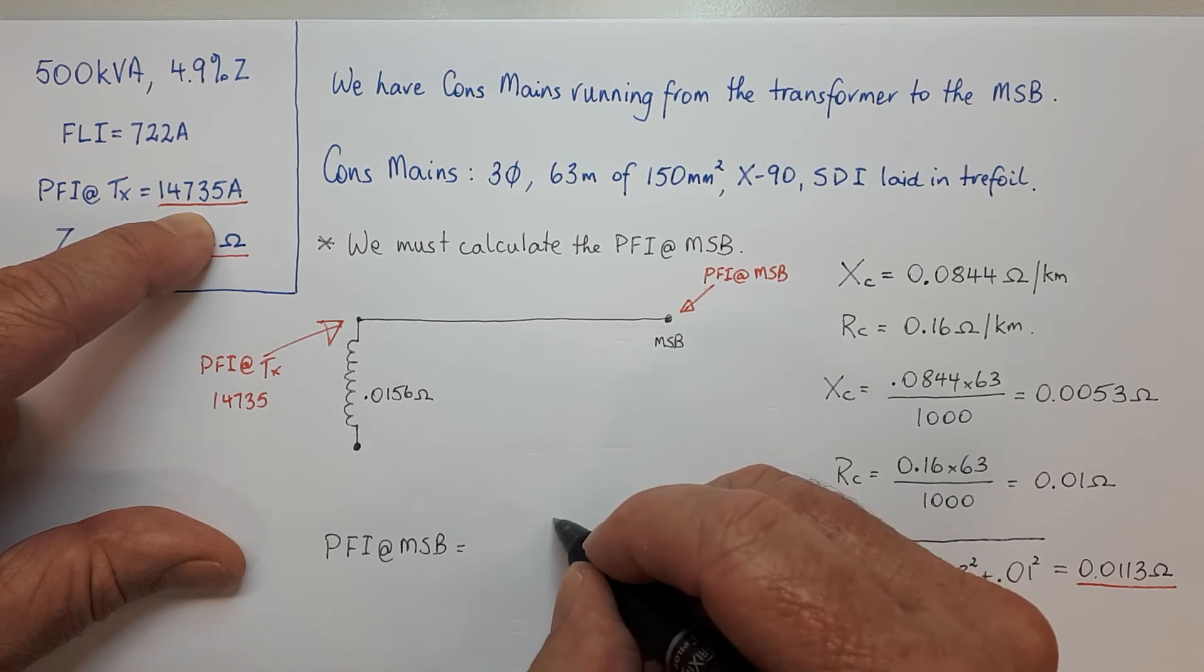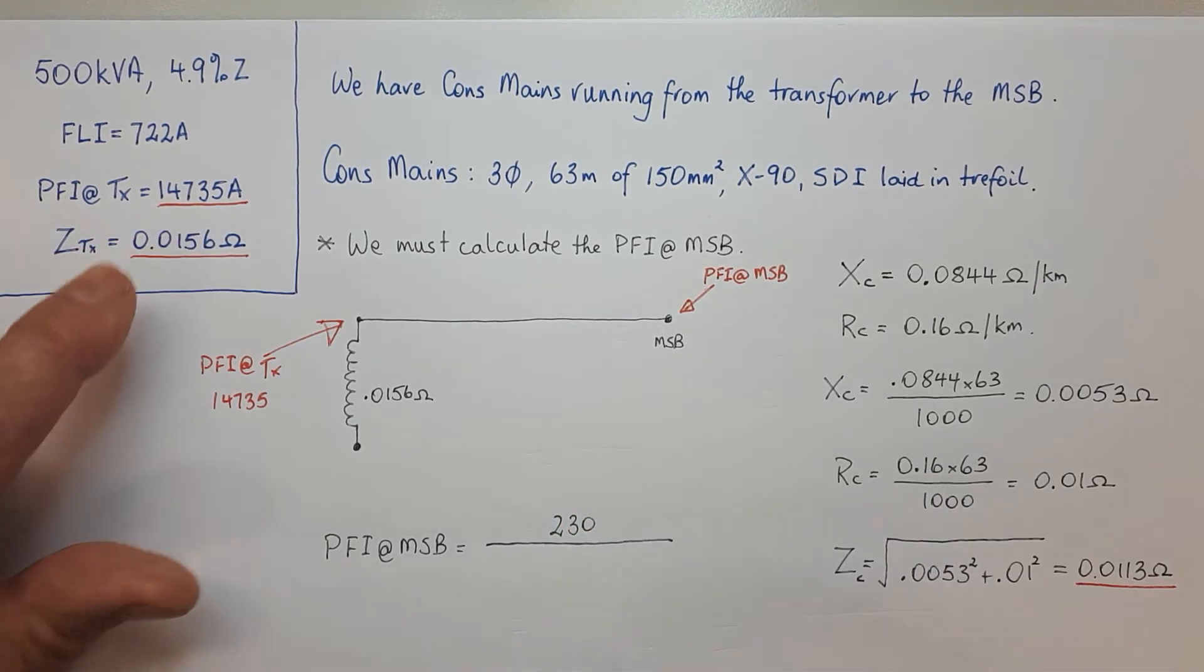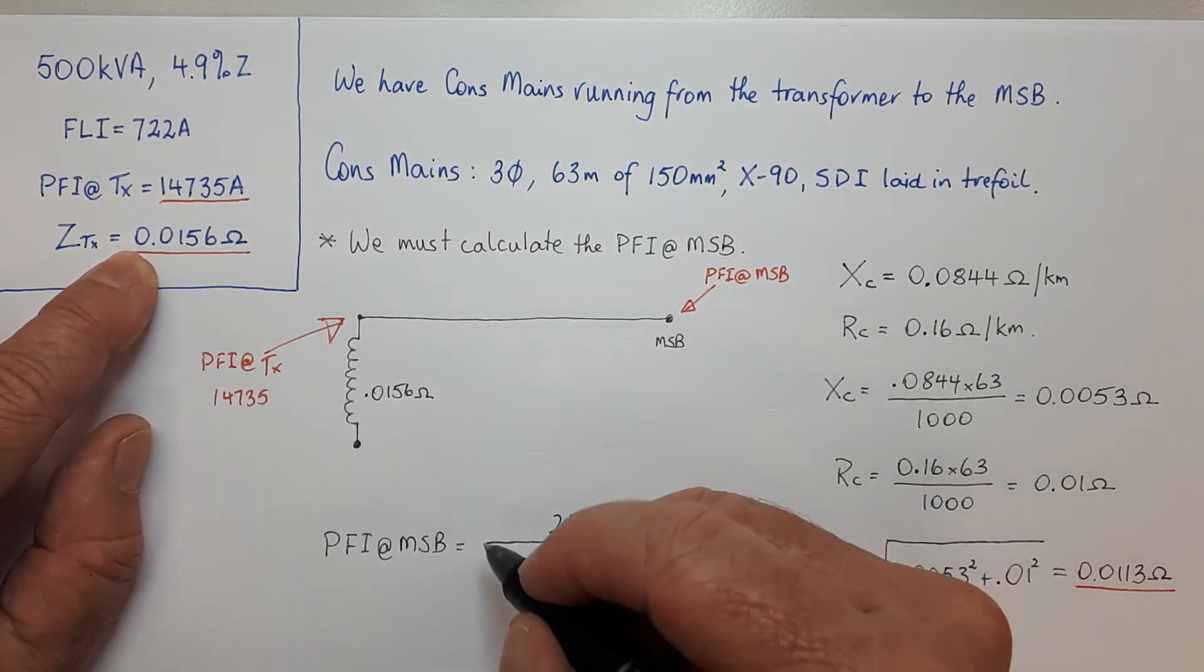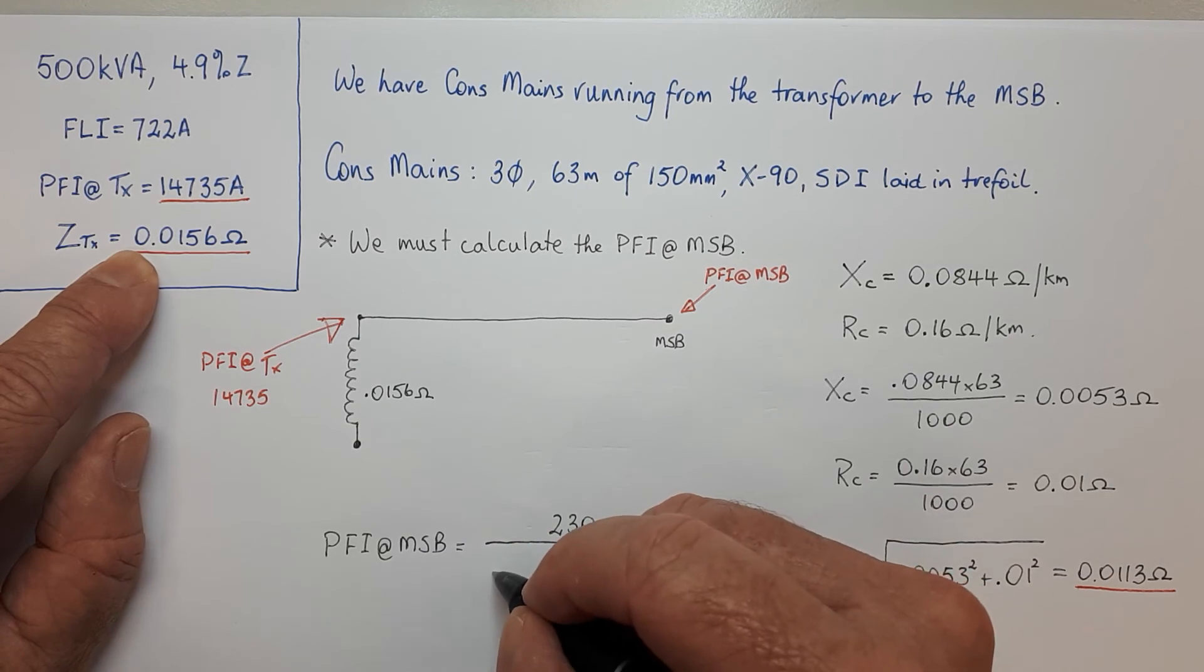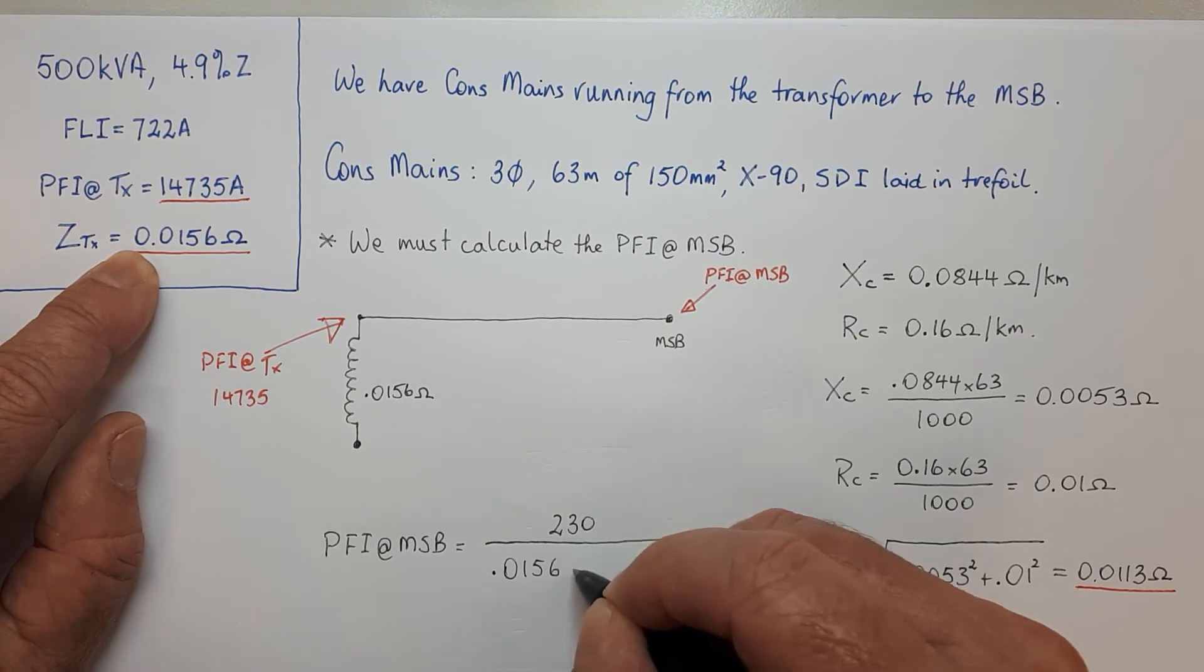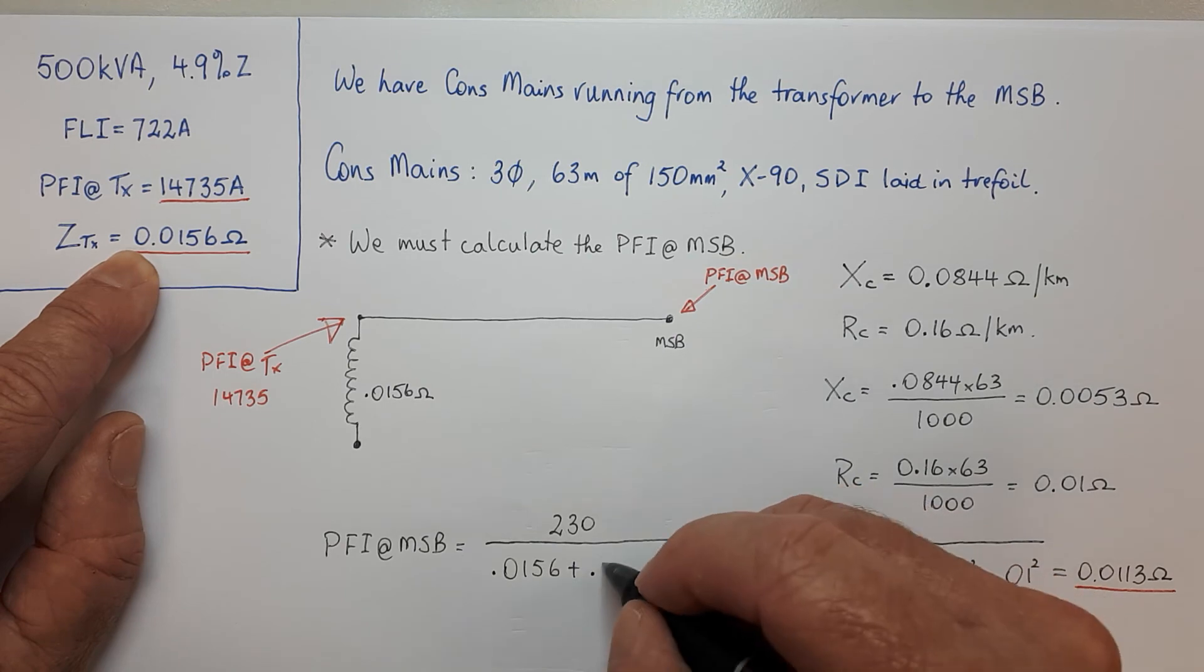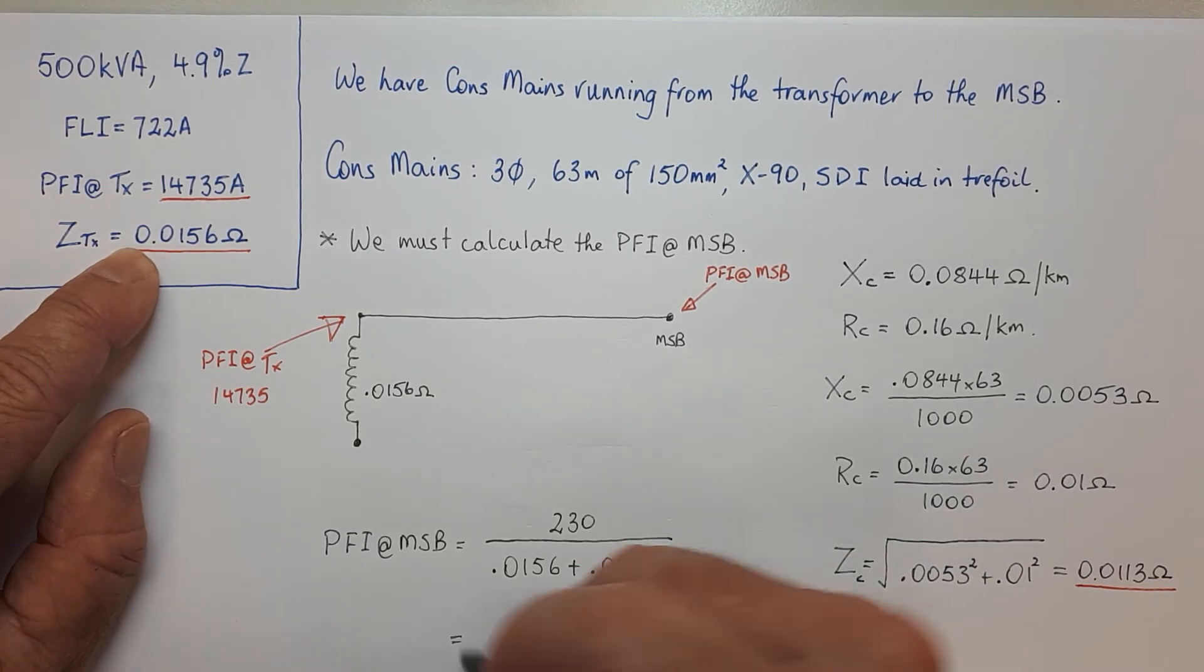230 over - if we just put in the transformer value it'll give us this, but of course we're going to put in the transformer value plus this value. So it's 0.0156 plus 0.0113, and we bang that out in our calculator and we find that it's 8,550 amps.